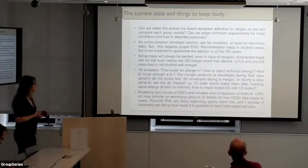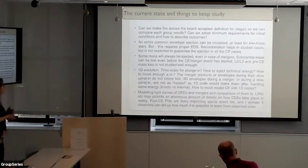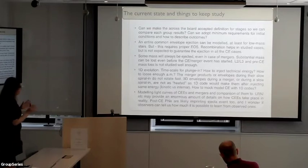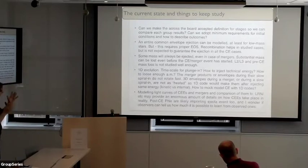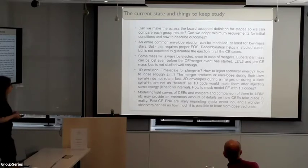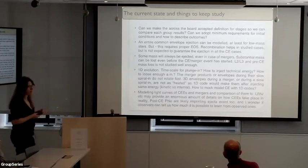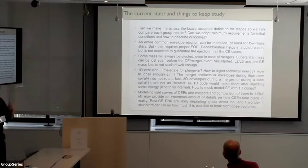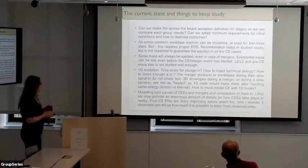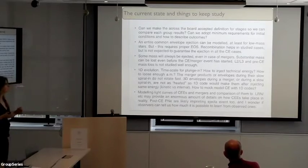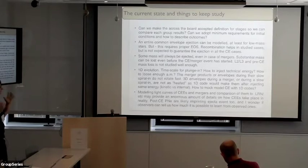I cannot say recombination will be guaranteed to help ejections in all common envelope cases — every single case has to be analyzed separately. Some mass will always be ejected even in mergers. Even if you work on binary mergers and merger products, it will not be M₁ plus M₂. Substantial mass can be lost even before the common envelope merger event has started, and that must be taken into account — I think this is understudied and may change the outcome dramatically.